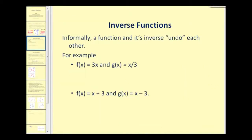Now let's talk about what an inverse function is. Informally, a function and its inverse undo each other. For example, f of x equals three times x and g of x equals x divided by three. Multiplying by three and dividing by three are opposite operations and therefore undo each other. Therefore, f of x and g of x are inverses of one another.